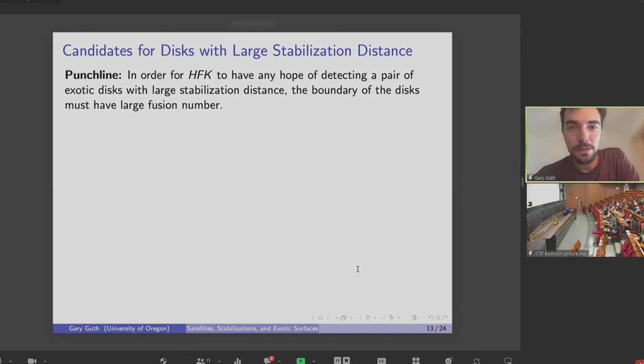So the punchline is, if you want to use HFK to find a pair of disks with a large stabilization distance, you need to work with a knot that's got a large fusion number. Otherwise, a single power of U will always sort of make the two maps equivalent.